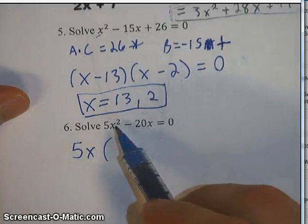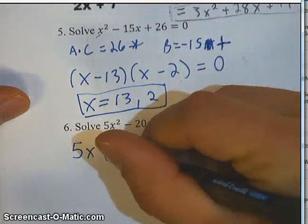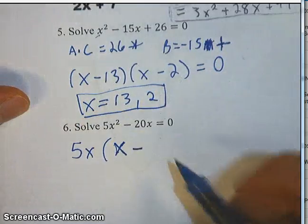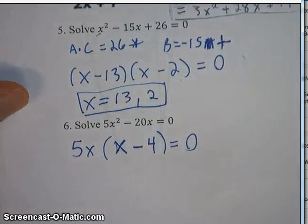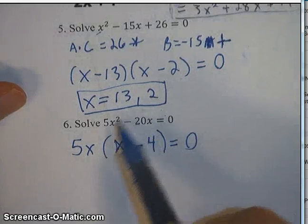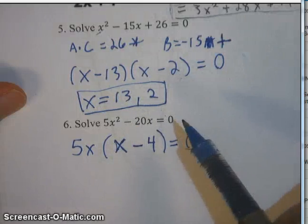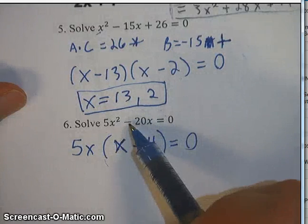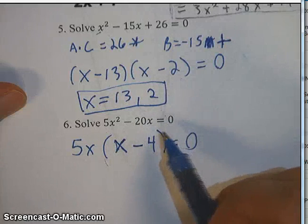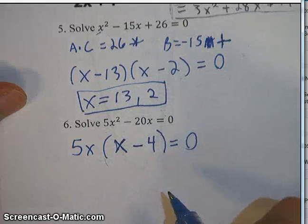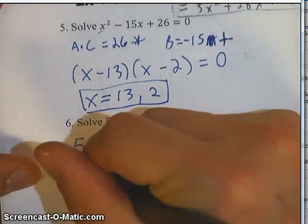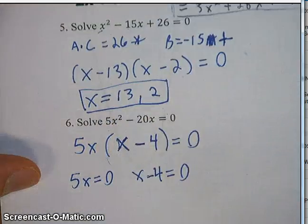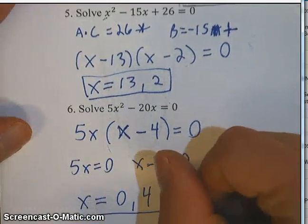Factoring out 5x from 5x² minus 20x: 5x² divided by 5x is x, and 20x divided by 5x is 4, giving 5x(x minus 4) equals 0. You could plug the original into the quadratic formula instead — just remember c equals 0. Setting 5x equal to 0 and x minus 4 equal to 0 gives x equals 0 and x equals positive 4. Those are the two solutions.